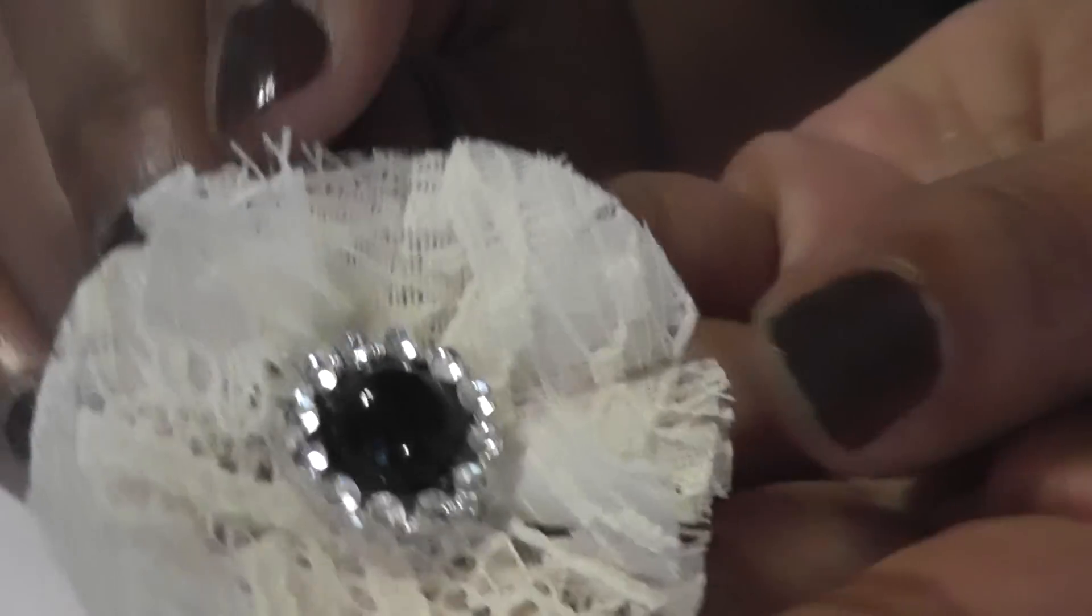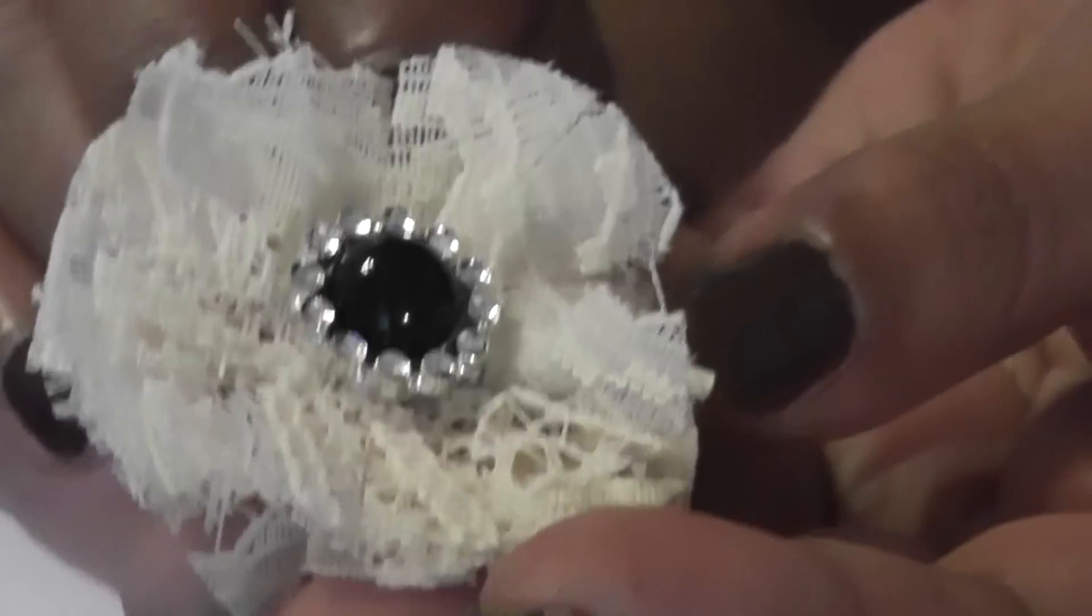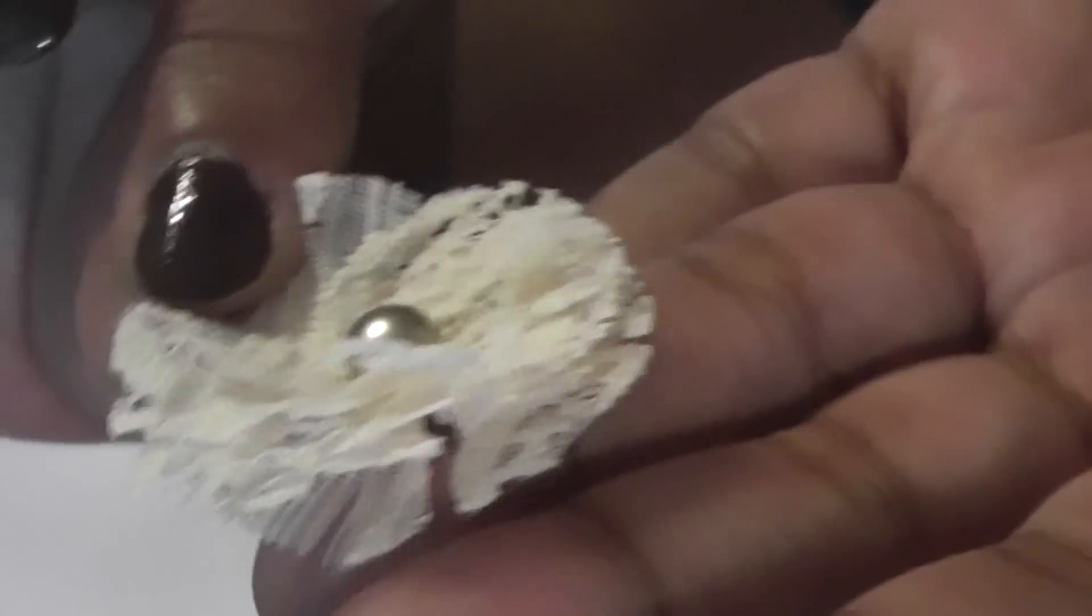And then this one was using the medium one, just two of them with the lace again. And then this was using two of the small flower die. I just added a little pearl center here.